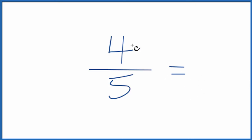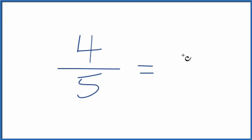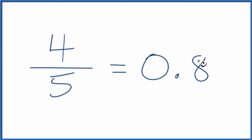So the first thing you could do, you could just divide four by five on your calculator, and you get 0.8. So that's one way to do it.